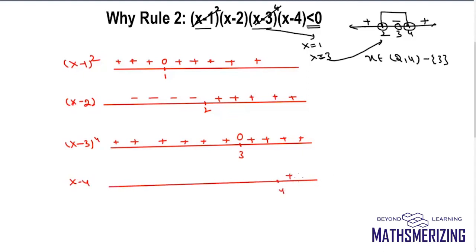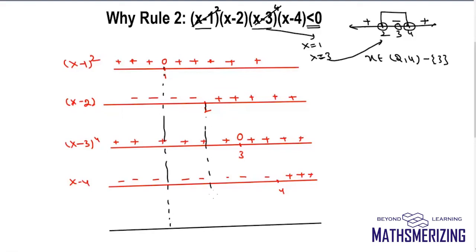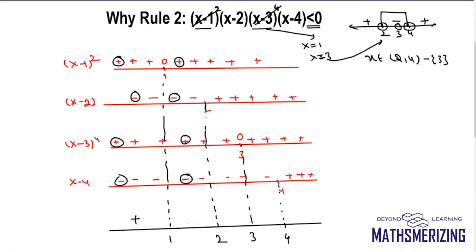For x minus 4, the critical point is 4 — plus, plus, plus, then minus. Taking a number line with critical points 1, 2, 3, and 4: when x is less than 1, it is plus into minus, plus into minus, which is plus. Between 1 and 2, it is plus, minus, plus, and minus, which is again plus.